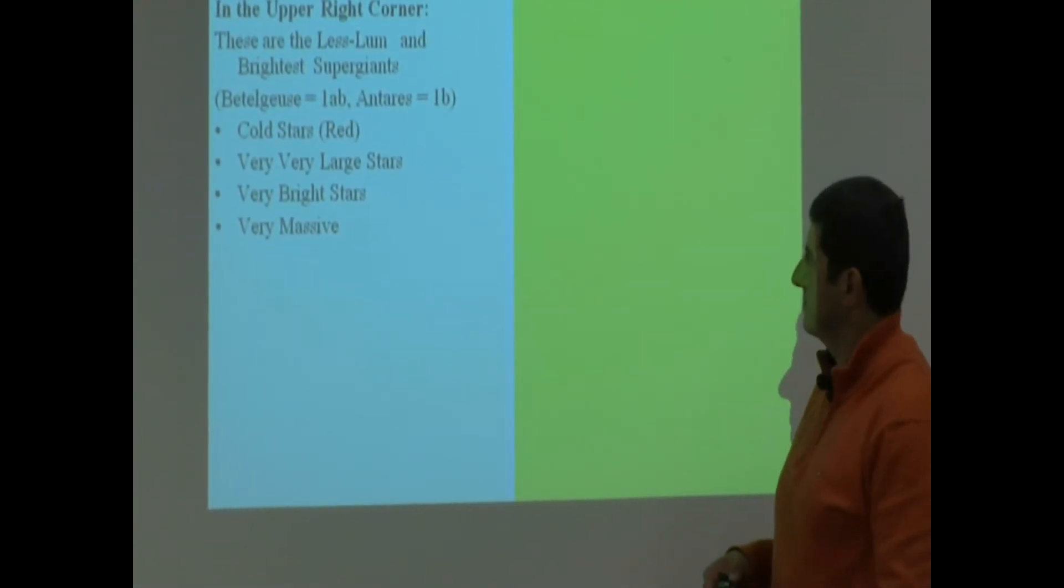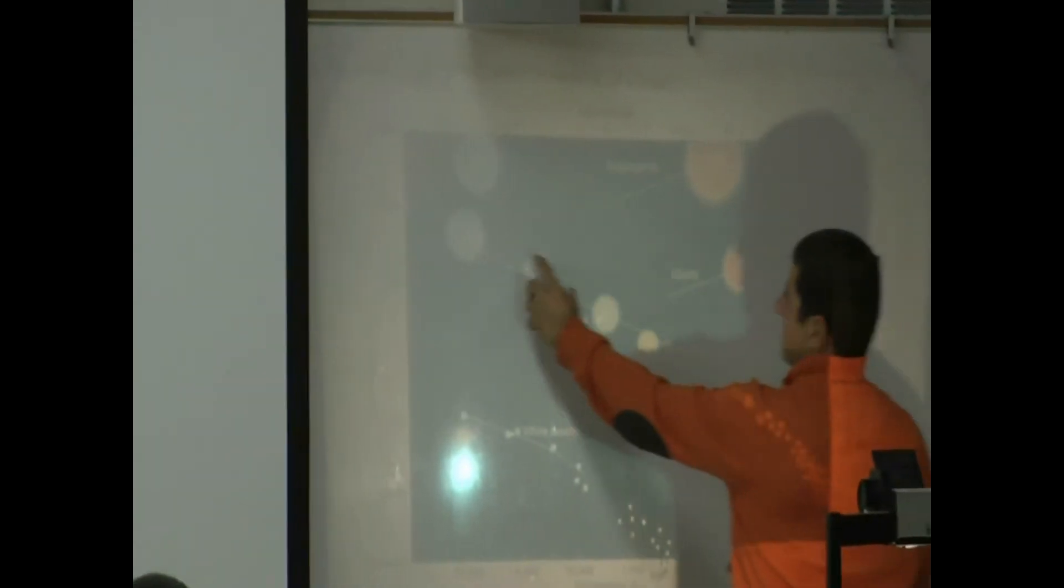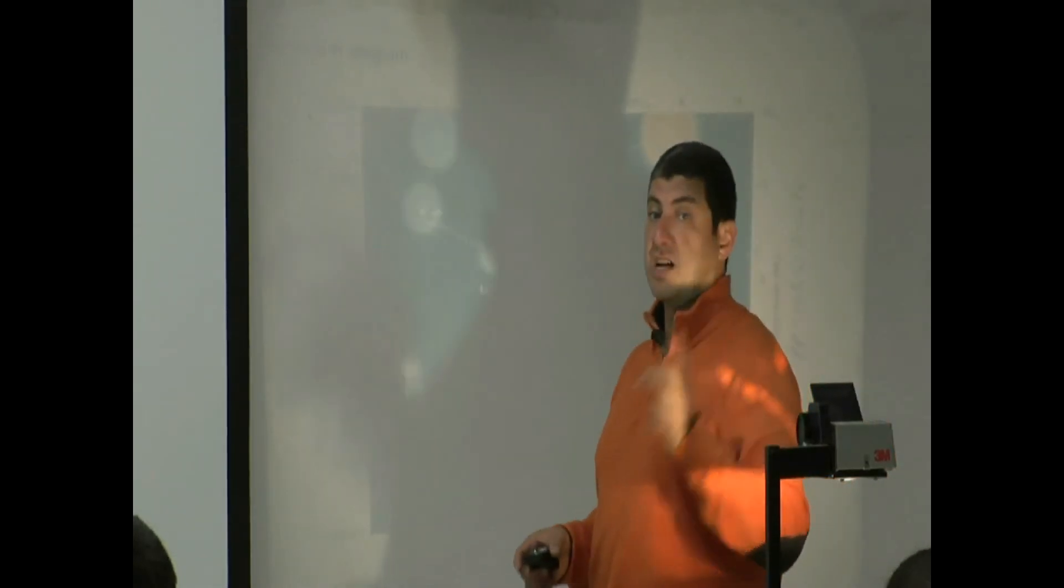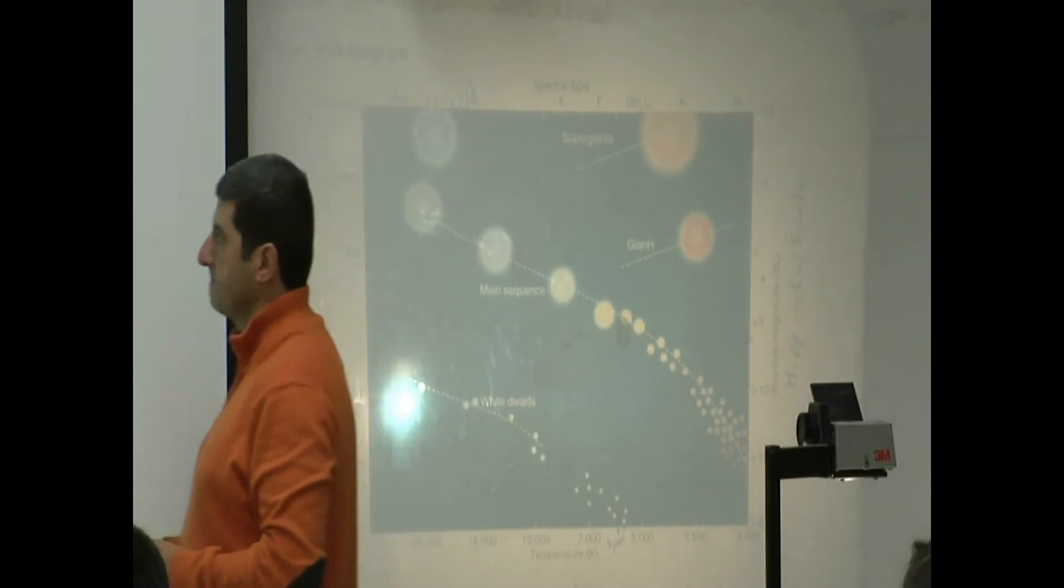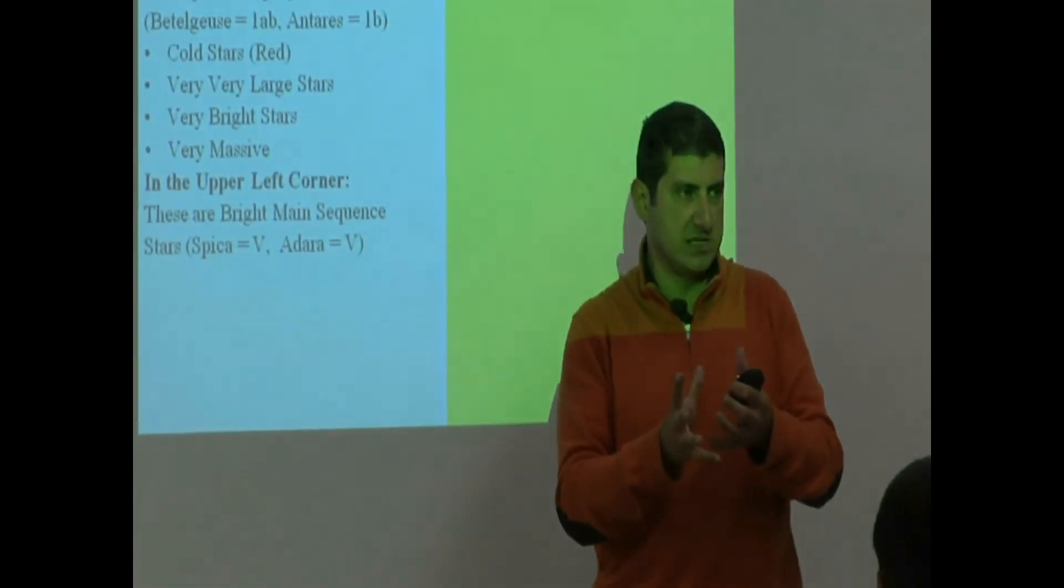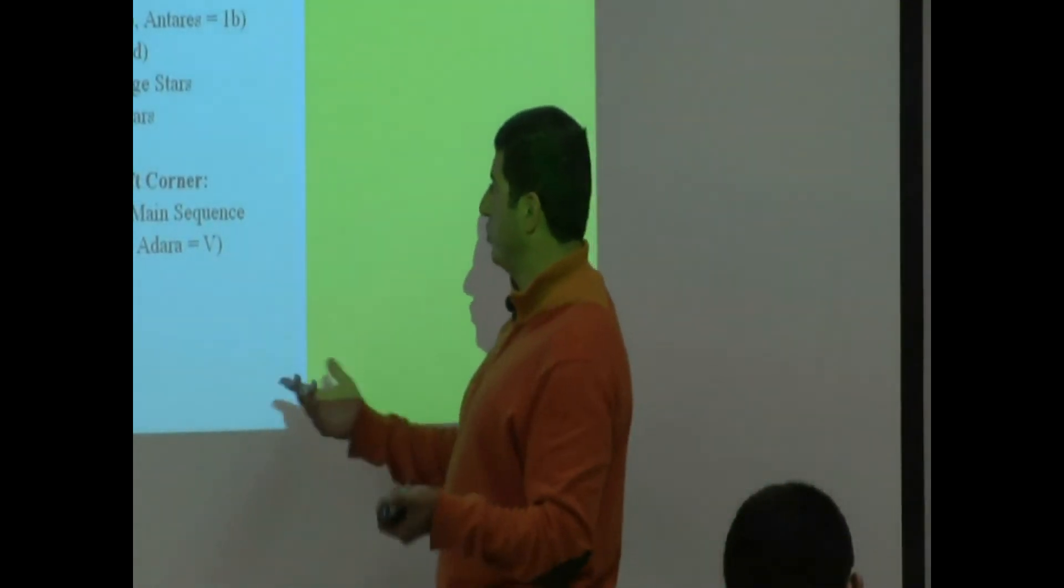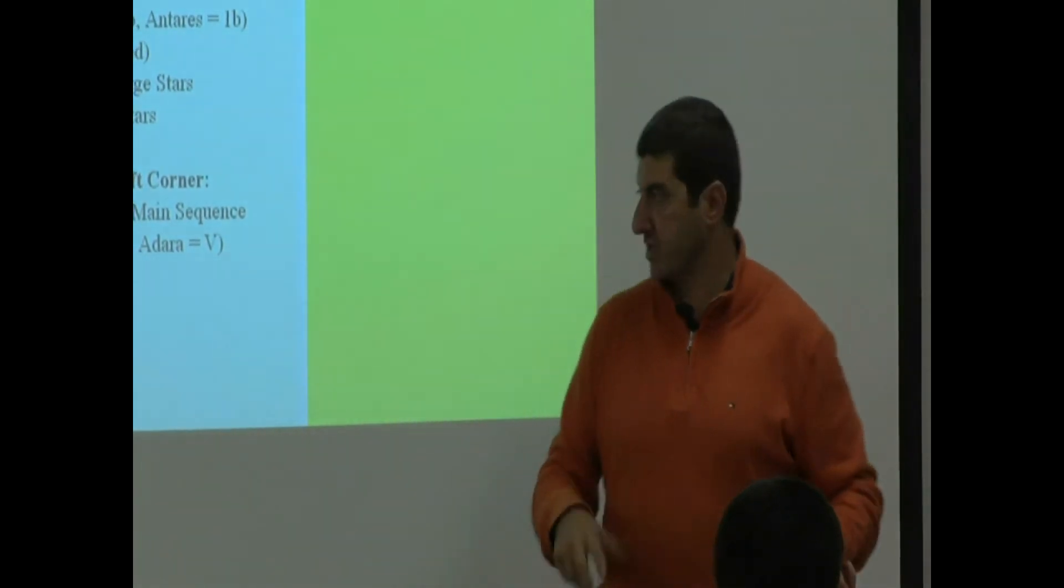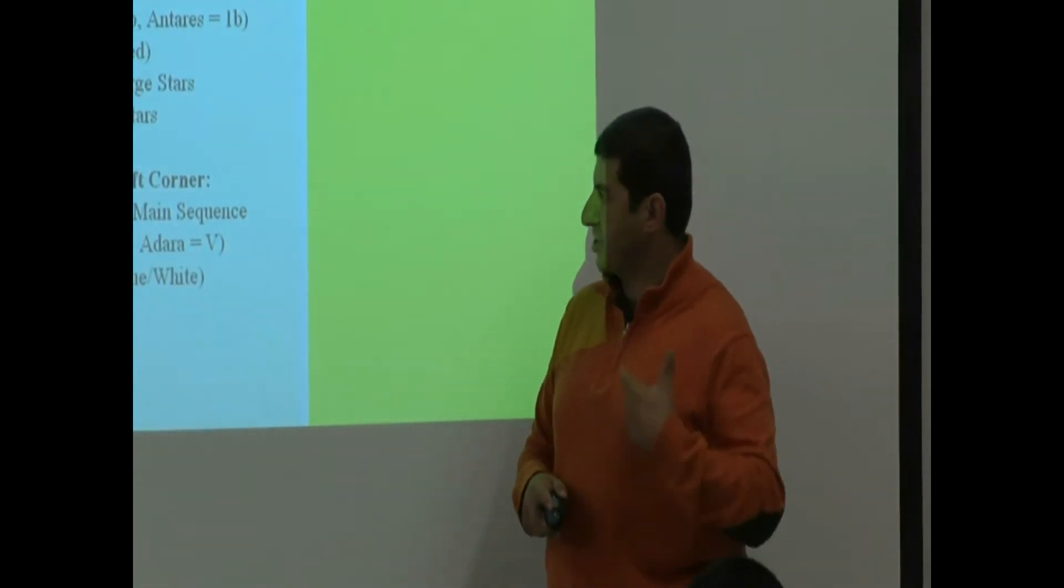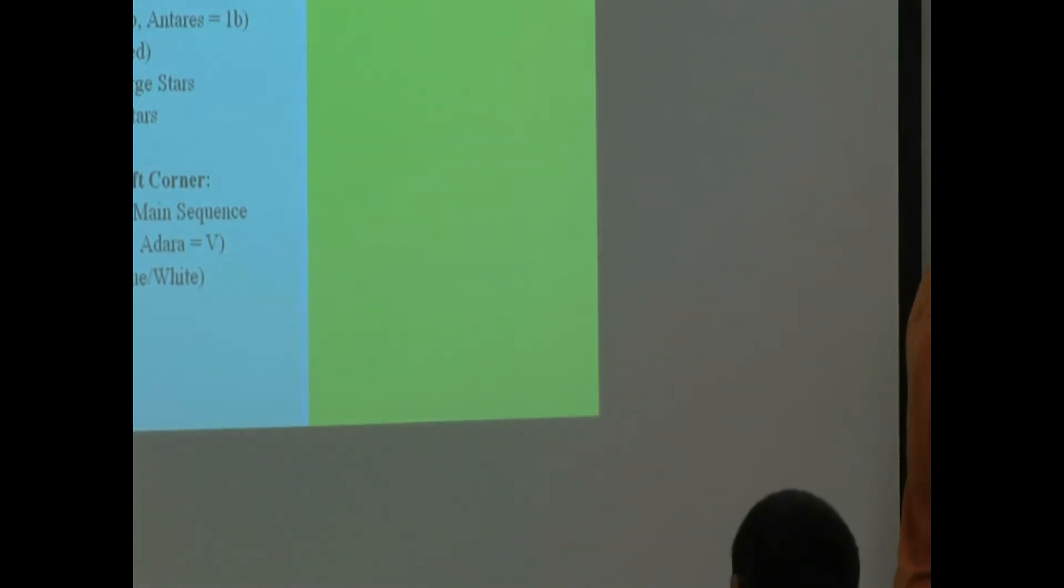In the upper left corner, these guys, how are they different than these guys? Yeah, they're hot now. These are still living stars, they're hot, super hot. So what are they? They are bright main sequence stars. That means they're not dead yet. Examples of those will be Spica, which is a Roman numeral five, Adara, Roman numeral five. That means they're both main sequence stars. So they are hot stars, blue slash white appearance.